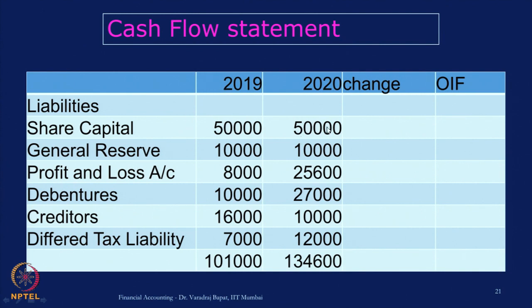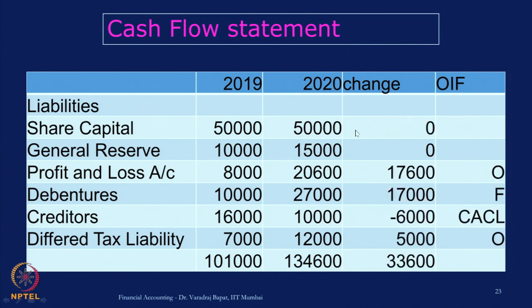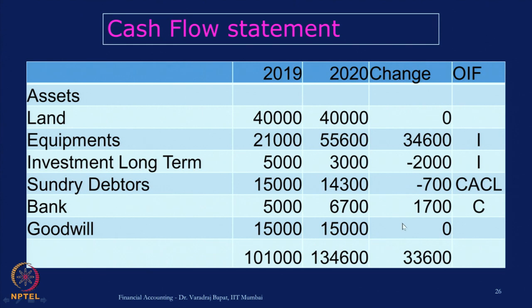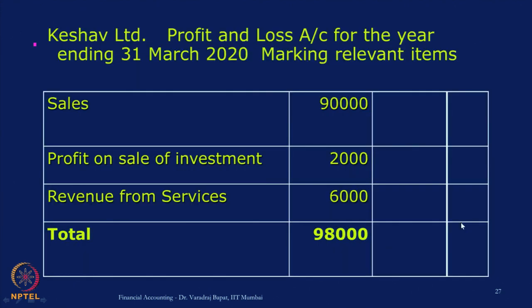We started with balance sheet liabilities — these were the markings. Profit and loss account was marked as O, debenture being a financing item F, creditors CACL, deferred tax liability O. For assets, equipment and long-term investments were I, and sundry debtors CACL, bank balance. Bank balance is a cash and cash equivalent item, so it should be marked as C — it will not be shown as a flow in the cash flow statement.